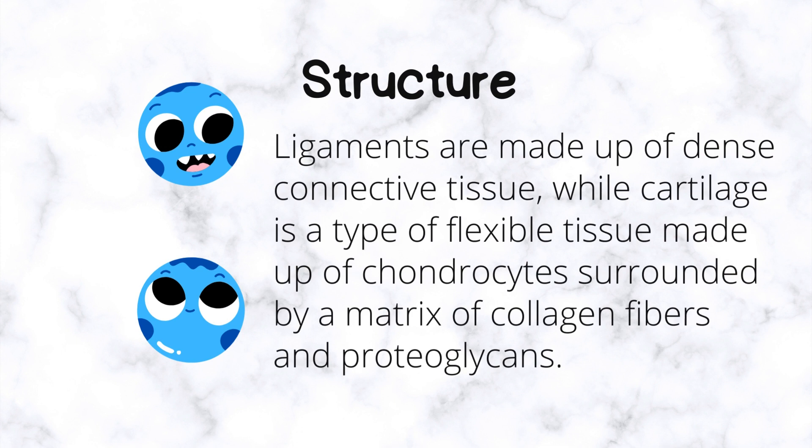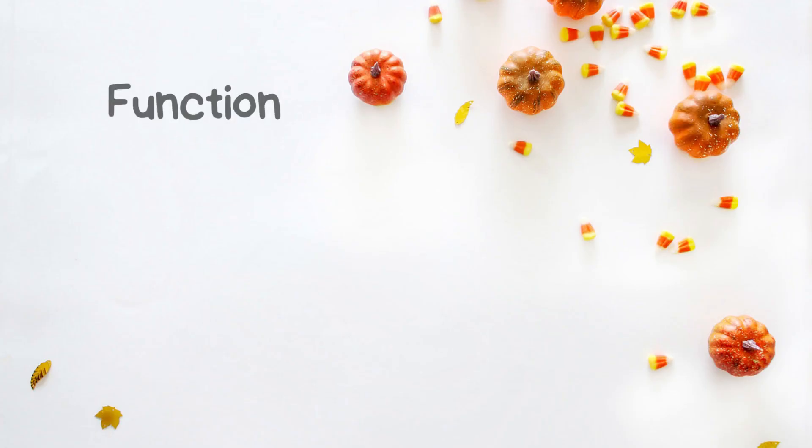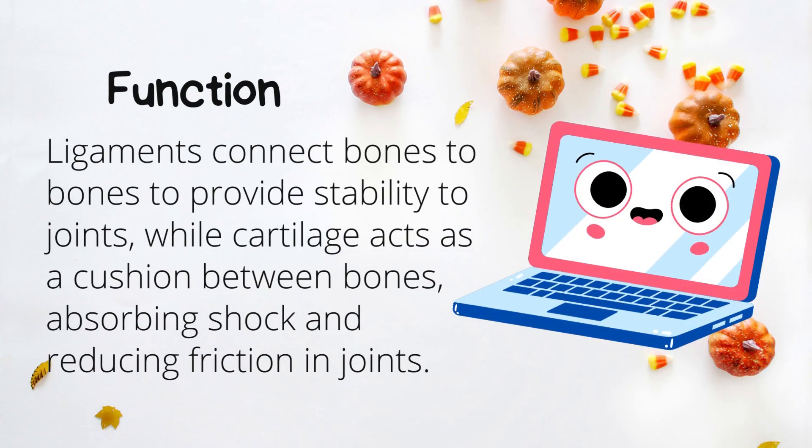case of ligaments, it is made by dense connective tissue. In the case of cartilages, it is made by flexible connective tissues. That tissue is known as chondrocytes, surrounded by a matrix of collagen fibers and proteoglycans.